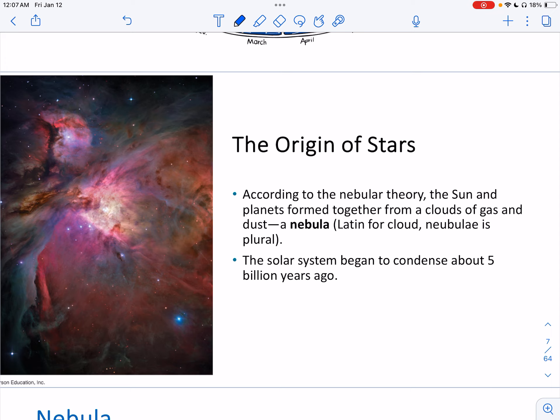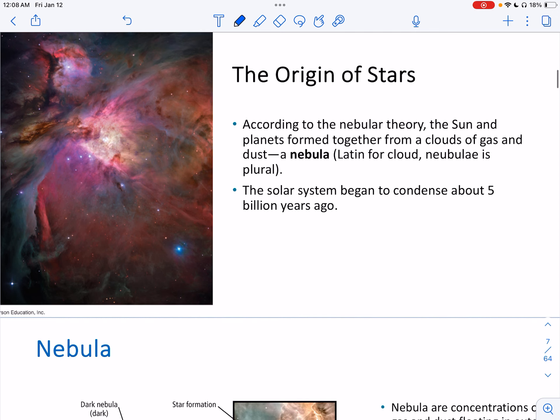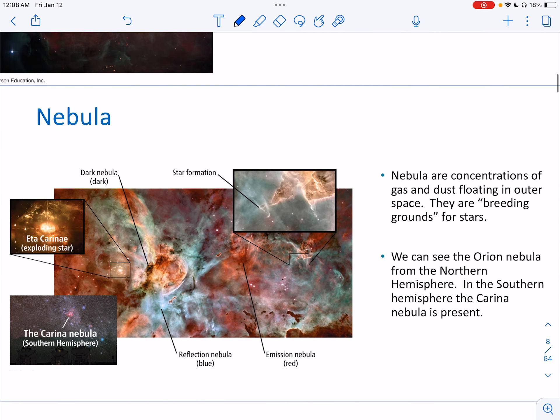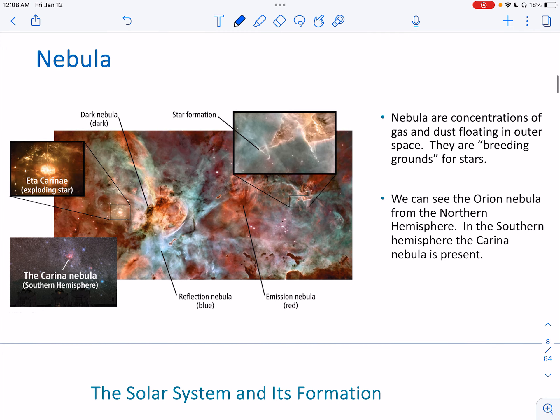So how do stars form according to the nebula theory, the sun and planets form together from clouds of gas and dust, which clouds of gas and dust are the fancy name is a nebula. And the solar system began to condense about 5 billion, 5 billion years ago. And now we can take a look at a nebula here. Stars are forming and then again, nebulas are concentrations of gas and dust. They are in outer space and they are basically breeding grounds for stars as they condense, they form stars and planets. So we can see the Orion nebula from the Northern hemisphere and in the Southern hemisphere, the Carina nebula is present.